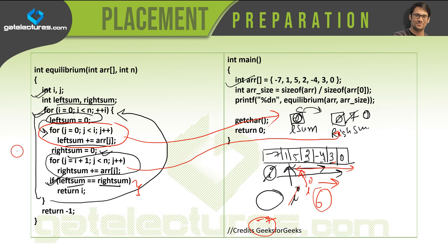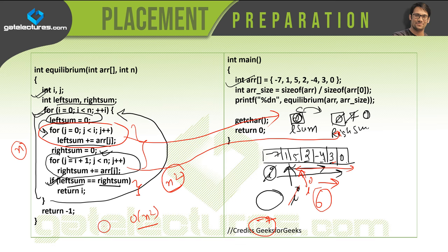The outer loop runs n times, and the inner loops together run a total of n squared times because of the outer loop. Therefore, the time complexity of this function is O(n²) — that is the average case time complexity. Now, pause the video here and try to find a solution better than this — can you find the equilibrium point with a time complexity less than O(n²)? Comment your solution in the comment section, then go to the next video where I provide the optimized solution. Thank you for watching.